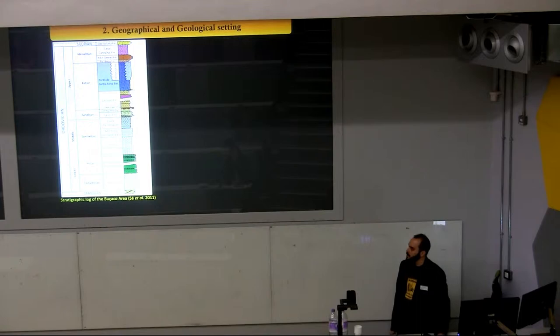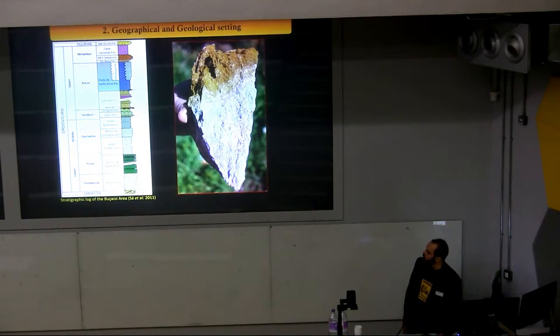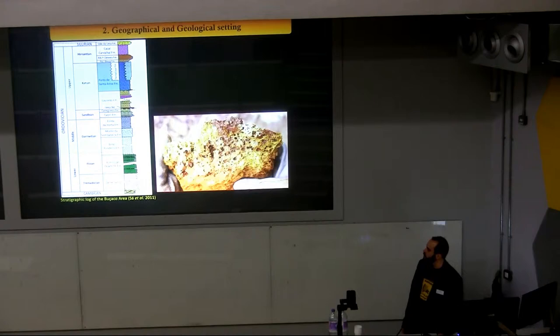The Porto de Santana Formation is mid-to-late Katian in age and is composed mainly by volcanic rocks that are usually weathered in a typical orange color. Here you can observe one of these volcanic rocks: in the lower part of the image you can see the real blue color of the volcanic rocks, and in the upper part the beginning of alteration. It is also common to find some samples with vascular porosity.